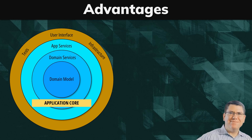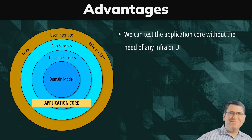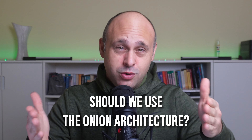We can test the core logic of our application without needing any infrastructure or UI — coding our app is way easier because we don't need a database or message queue to test it. The other important aspect is that we can change the infrastructure or UI without rewriting the application core, which was Palermo's main goal when defining the onion architecture.